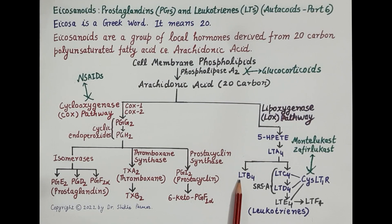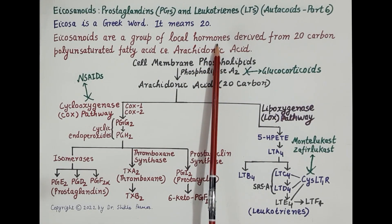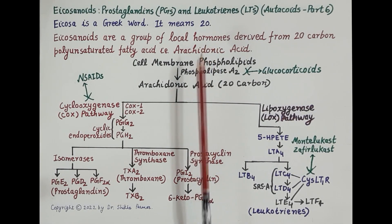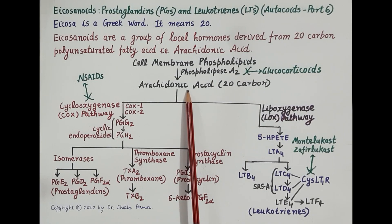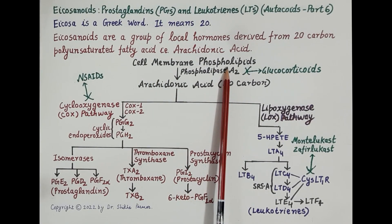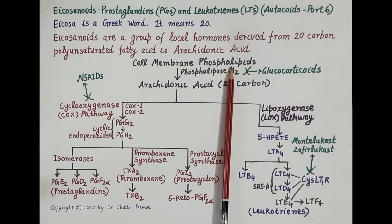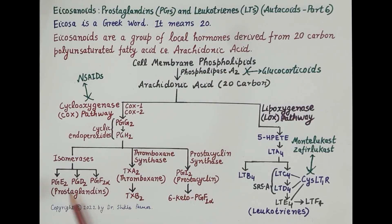All these eicosanoids are autacoids — local hormones that are synthesized locally. All eicosanoids are derived from arachidonic acid, which is in turn derived from cell membrane phospholipids. Since every cell has a phospholipid bilayer membrane, eicosanoids are obtained from lipids and are thus lipid-derived autacoids.